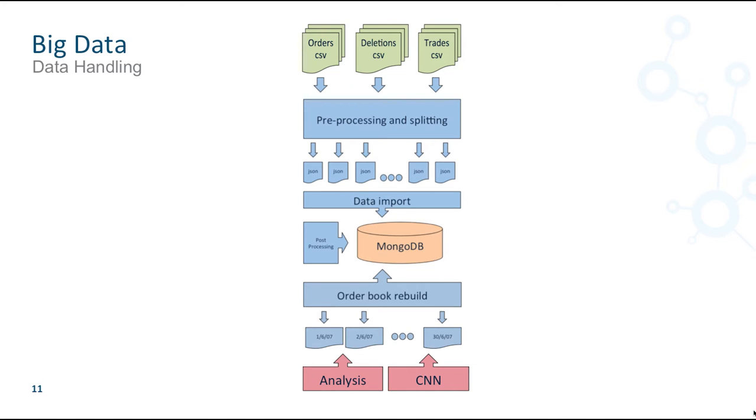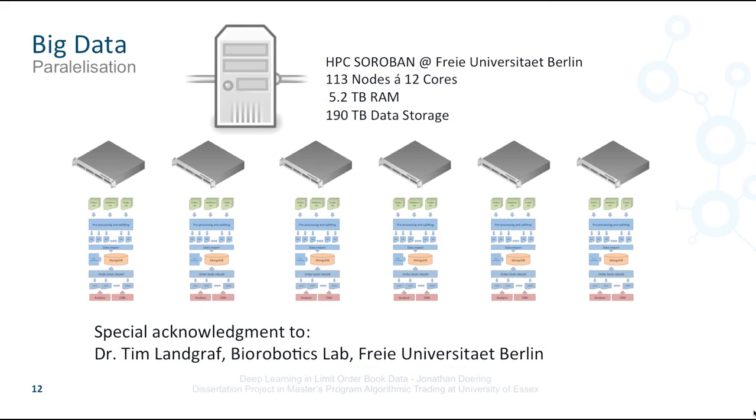Although the data handling for a single month is already implemented in a parallel approach, the rebuild process for all 13 months was also distributed over different nodes in a computer cluster. The independence of each month's information makes this possible. In collaboration with Biorobotics Lab of Freya Universität Berlin, the high-performance cluster CURVA is used to handle this task. CURVA consists of 113 single-usable nodes and thus enables to process the data in a reasonable amount of time.